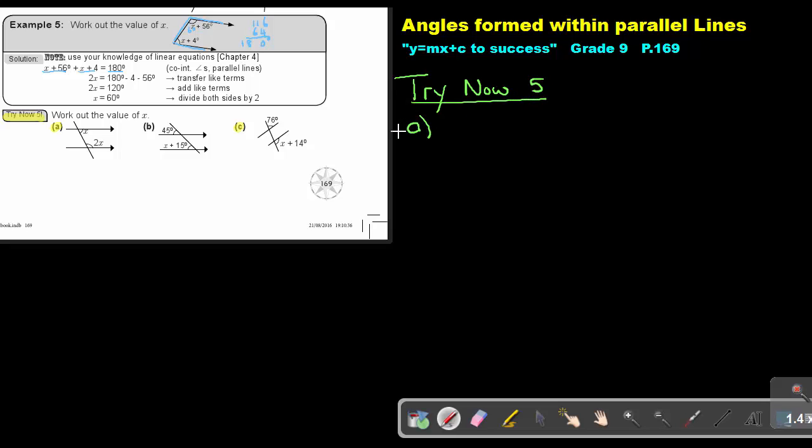Let's start with number A. If you look at this, can you see the lines are parallel? So this will be again co-interior angles. I'm going to say X + 2X will be supplementary, that means 180. This is the co-interior angles of parallel lines.